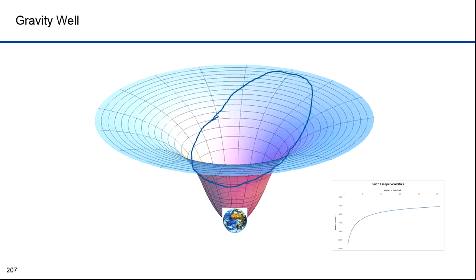Imagine a trajectory where an object approaches the steep part of the well — as it descends, it picks up speed, whips around, and is kicked out to the shallow part. This characterizes an elliptical orbit and demonstrates that a planet must travel faster when near the planet and slower when farther away. If the planet doesn't go fast in the steep part, it will fall into the bottom of the well; if it travels too fast in the shallow part, it will escape. This two-dimensional analogy is flawed as it's a two-dimensional model of a three-dimensional phenomenon and assumes a downward gravitational force, but it illustrates that gravity is more like a curvature of space than a force.